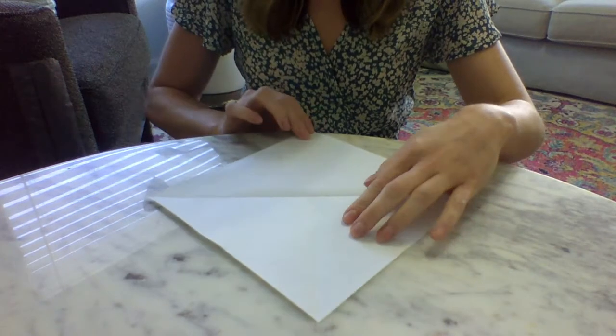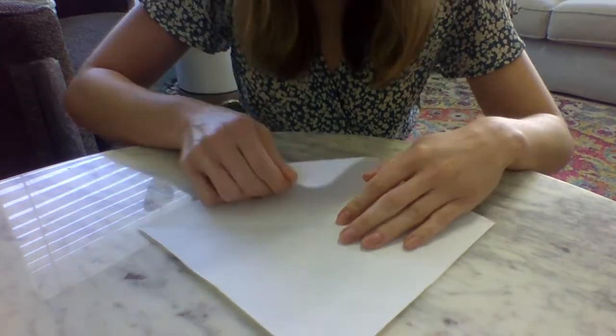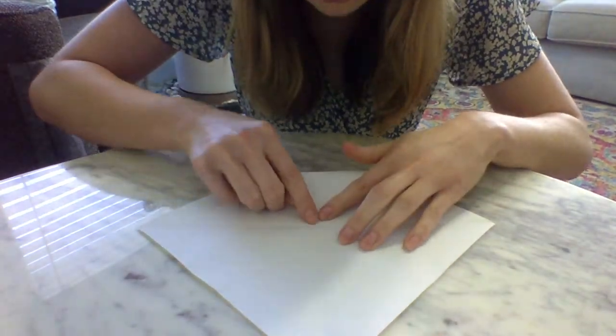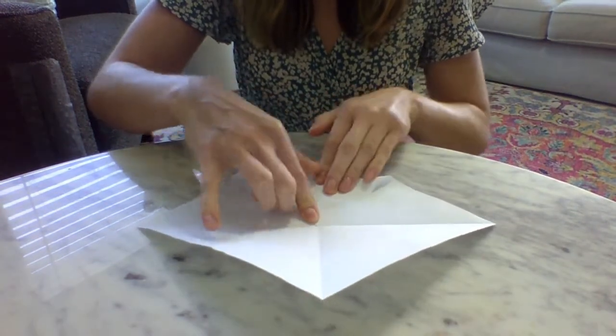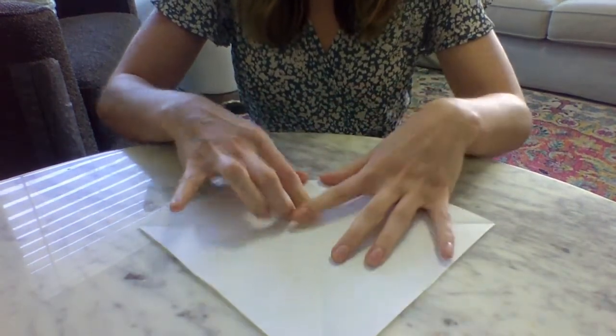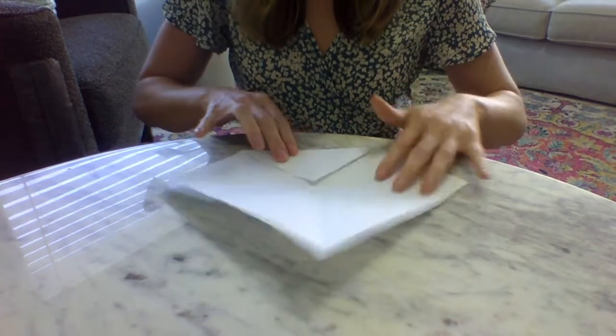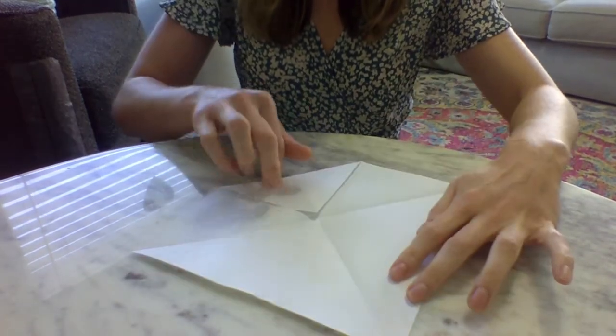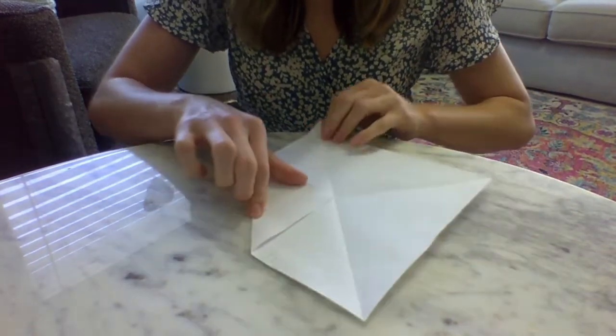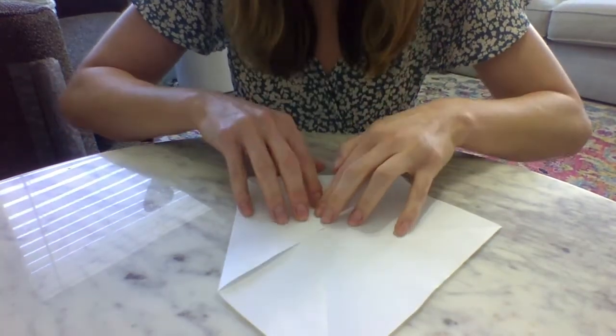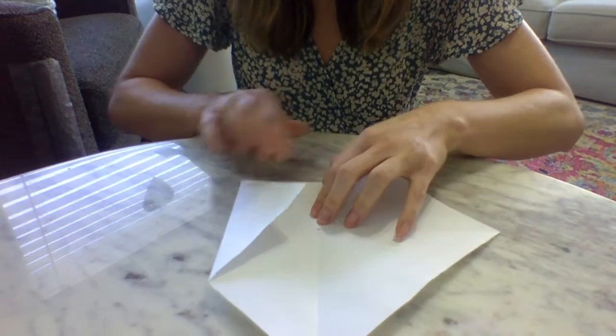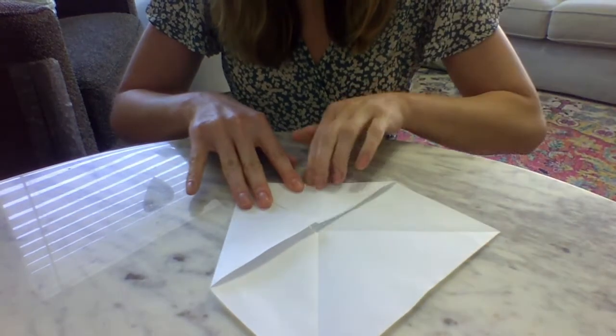Now take one corner and fold it to the very center where X marks the spot. Turn your paper and fold the next corner up to where X marks the spot, and do that with all four corners.